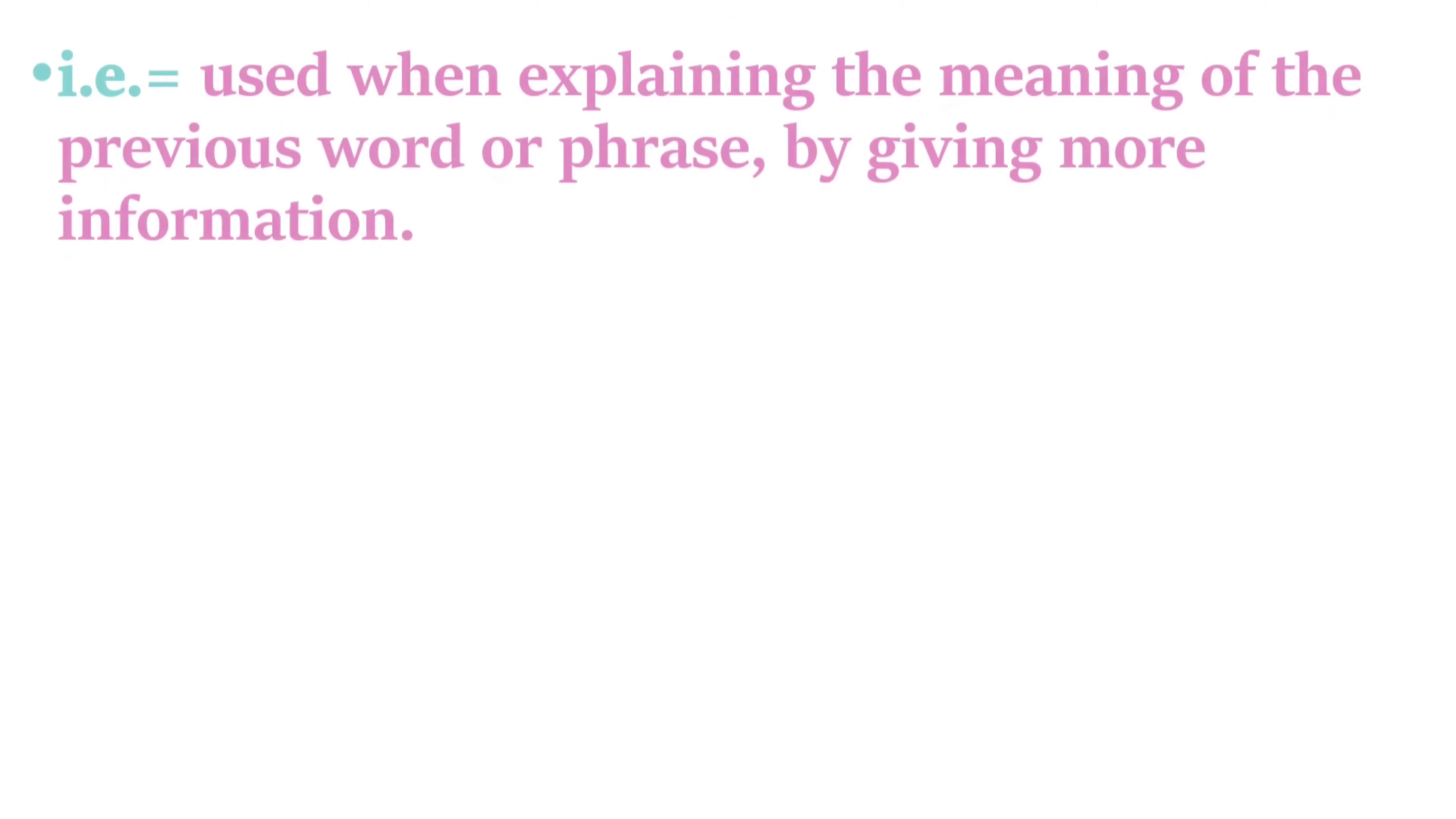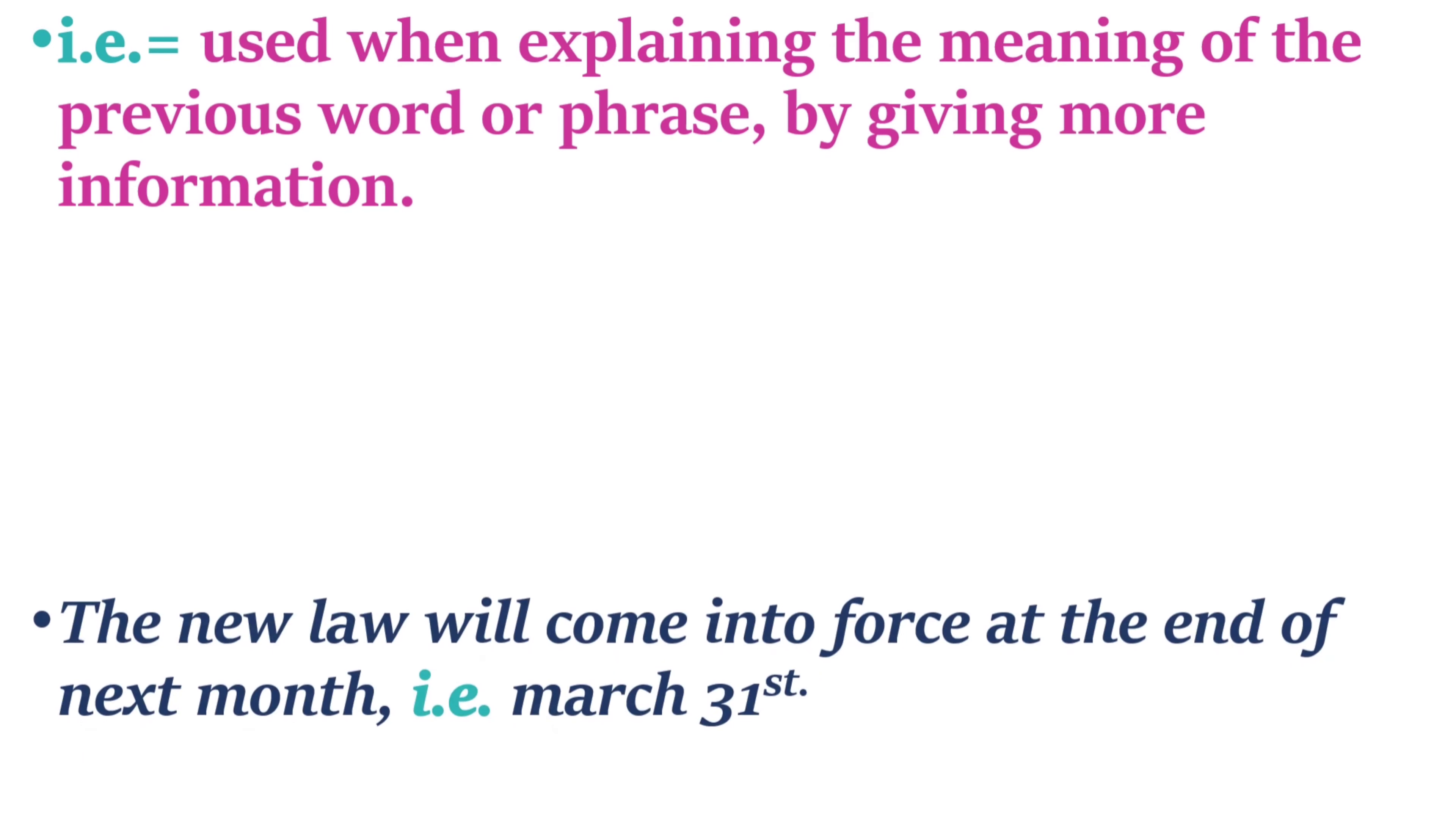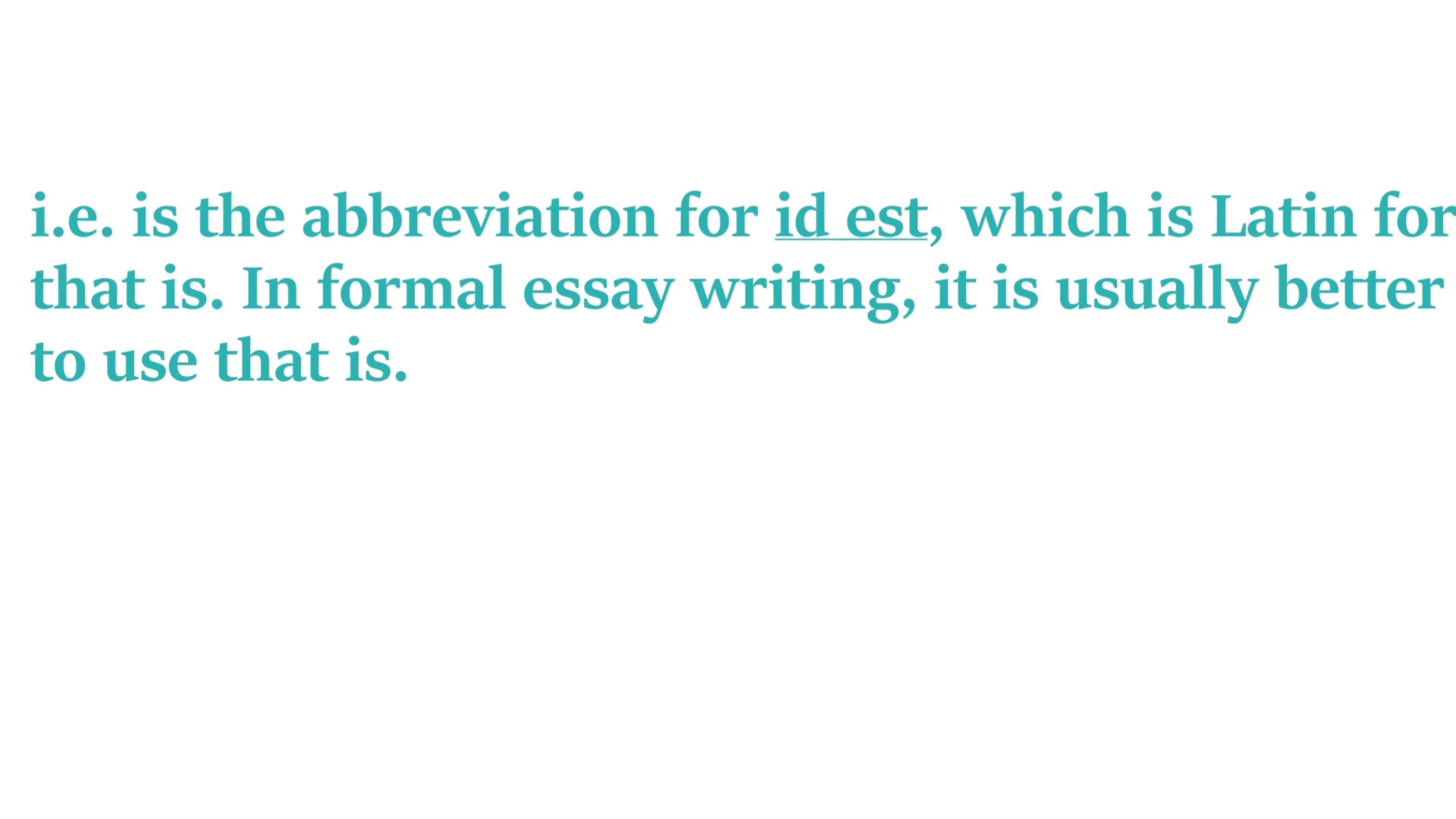'I.e.' is used when explaining the meaning of the previous word or phrase, by giving more information. Example: The new law will come into force at the end of next month, i.e. March 31st. I.e. is the abbreviation for id est, which is Latin for 'that is.' In formal essay writing, it is usually better to use 'that is.'